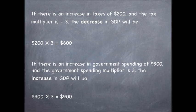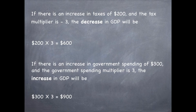If there is an increase in taxes of $200 and the tax multiplier is negative 3, the decrease in GDP will be 200 times 3, which equals 600. If there is an increase in government spending of $300 and the government spending multiplier is 3, the increase in GDP will be 300 times 3, which equals 900.